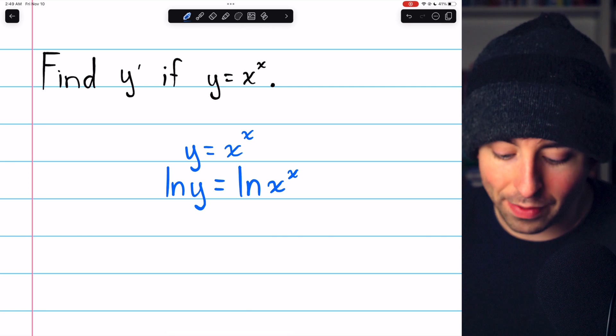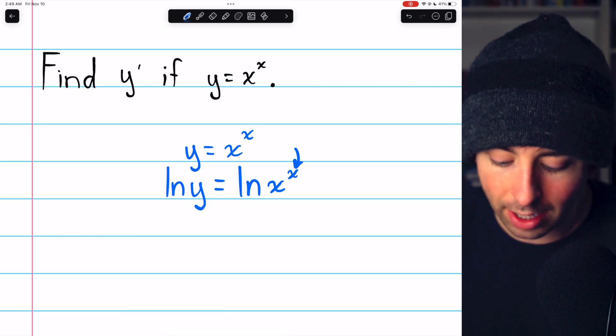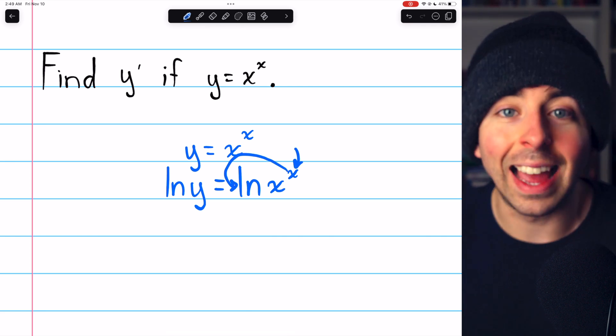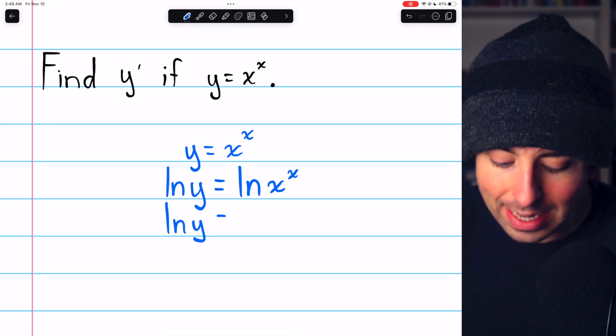Now, when we have an exponent inside a log, we can bring it out as a factor. Thus, we have log y equals x ln x.